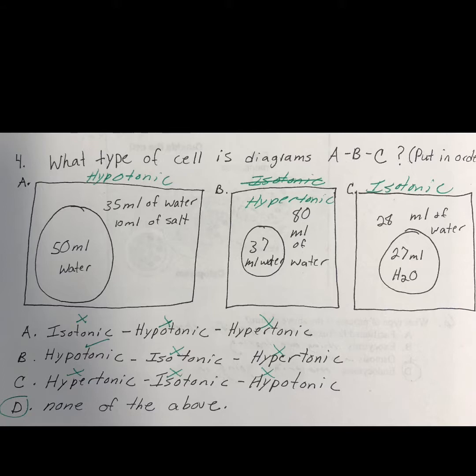Number four — if you justified and did that right, then you know that diagram A is hypotonic, diagram B is hypertonic, and diagram C is isotonic. Looking at answer A, I had already put X by the order because it didn't check out when I got it right and the other ones were wrong. C was all wrong as well, so D should have been 'none of the above.'